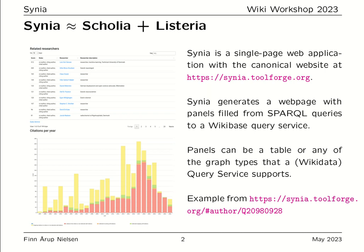For example, the Wikidata query service panels can be a table or any of the graph types that the Wikidata query service supports. On the left side over here is an example screenshot from a particular Cynia web page displaying information about an item like an academic author, where there's a table at the top and below it a bar chart from the query service.